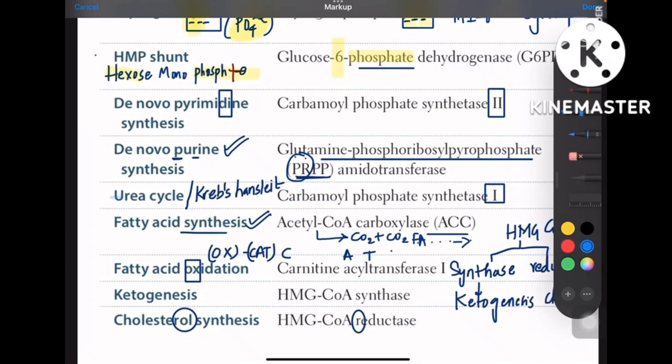But coming to pyrimidine, remember it as 'dine', that is 'di' means 2, so CPS2 is for pyrimidine and CPS1 is for urea cycle. Urea cycle has A in the end, so CPS1 is for urea cycle whereas CPS2 is for pyrimidine cycle.